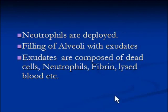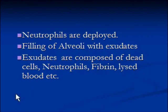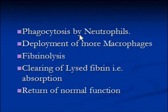The alveoli get filled with exudates. These exudates are composed of dead cells, neutrophils, fibrin, and lysed blood — especially lysed red blood cells. It is this lysed blood that gives the brownish color to the sputum of an infected person. Fibrin comes from fibrinogen, which is a blood plasma protein and is part of the healing process.